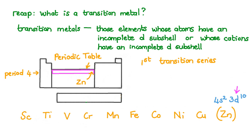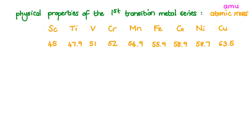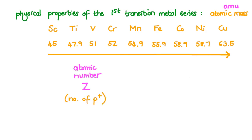Let's have a look at the atomic masses of these elements. The atomic masses are listed in atomic mass units. Going from left to right across the period, we find a general trend: as the atomic number or number of protons increases, so the atomic mass increases too. However, there is a slight dip in the trend for nickel.